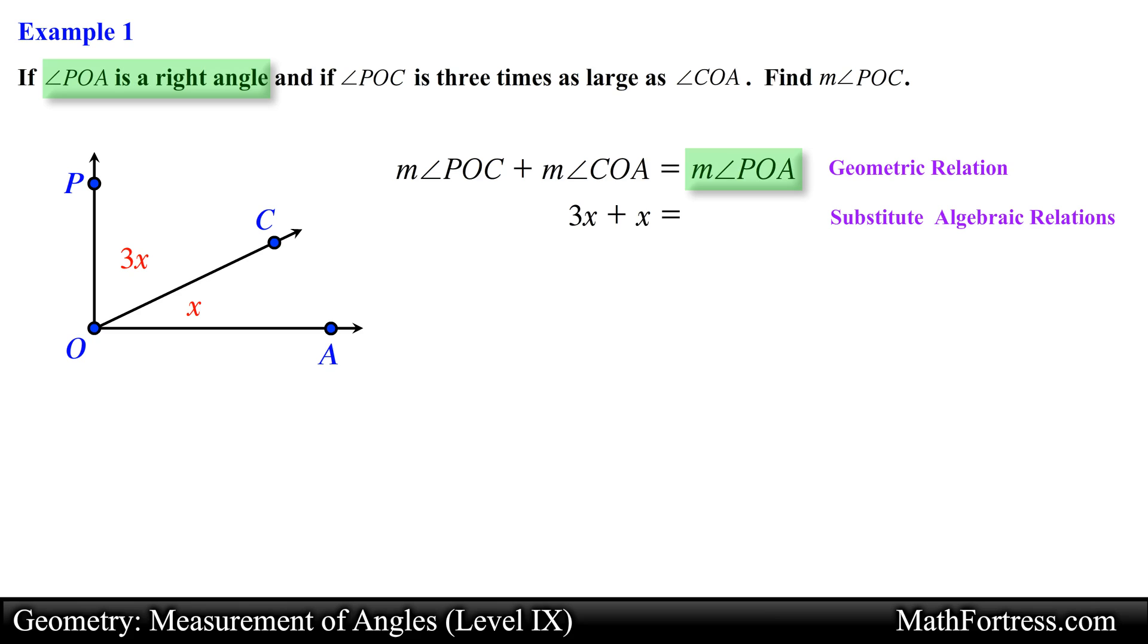We also know that angle POA is a right angle, so we can replace the measure of this angle with 90 degrees. Now it is just a matter of solving for x. Doing that we obtain x equals 22.5.